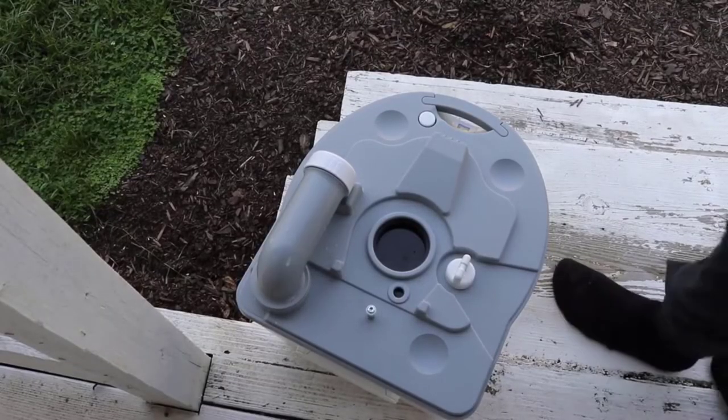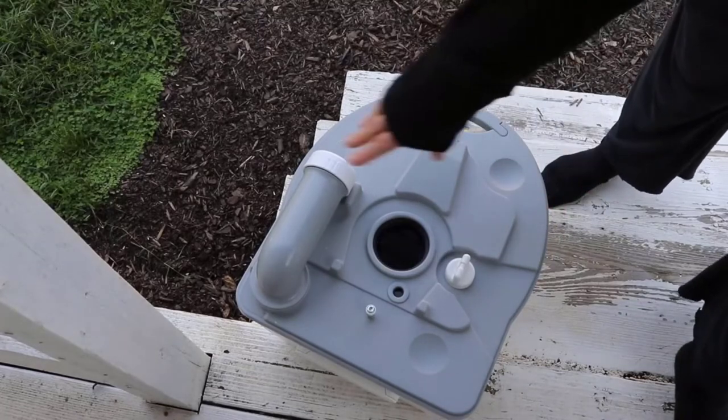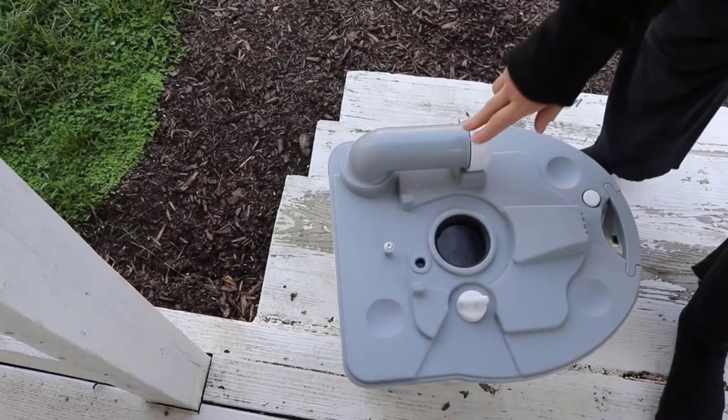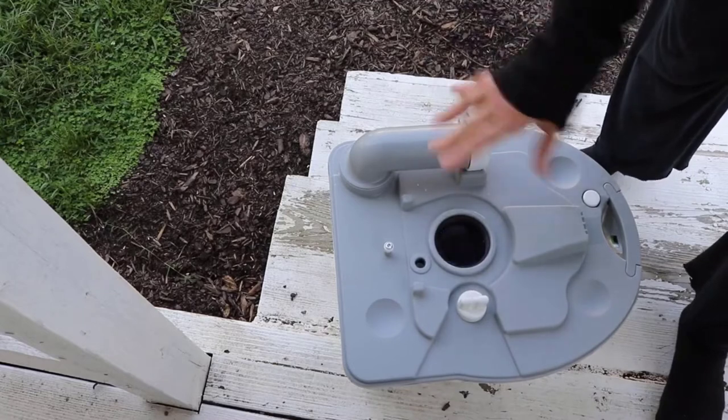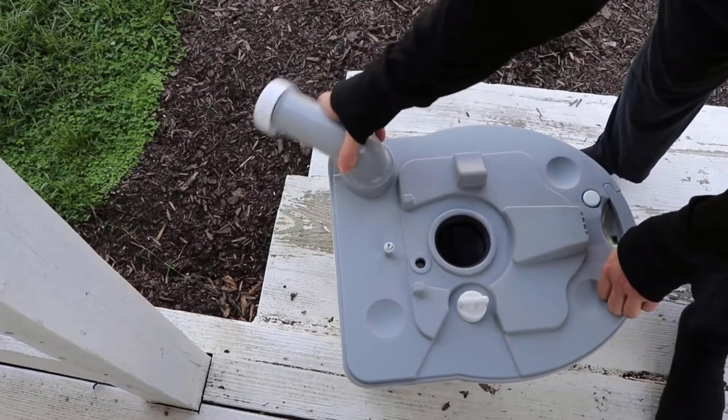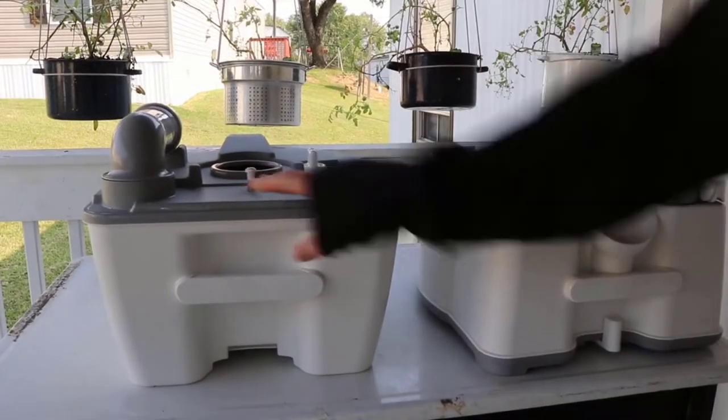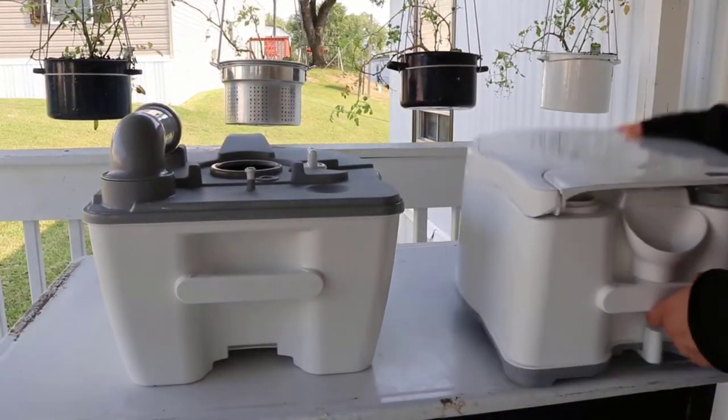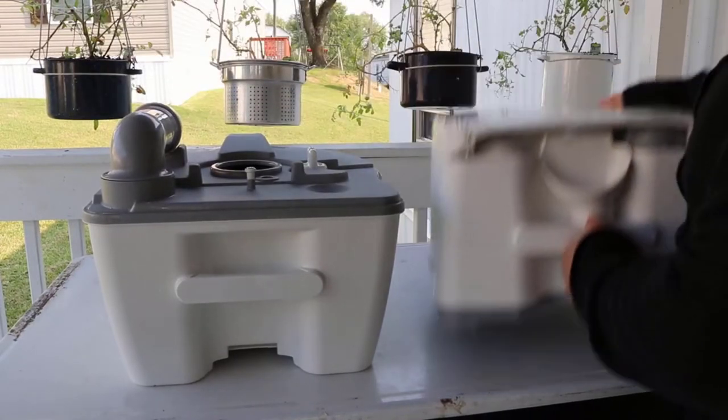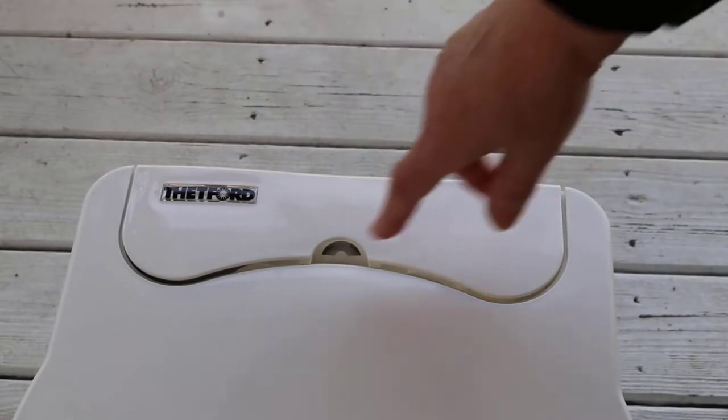The model has a 5.5 gallon waste tank capacity and a 4.4 gallon water tank capacity that is much larger compared to Camco portable toilet. In fact, this particular model offers a battery power electric flush system that is powerful and comfortable in use. In addition, the toilet has integrated toilet paper holders that allow the user to keep their toilet paper within their reach but at the same time out of people's sight.